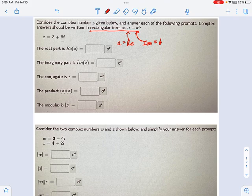So you can see in this first set of questions, these are pretty straightforward, right? The real part is just 3. The imaginary part is 5.